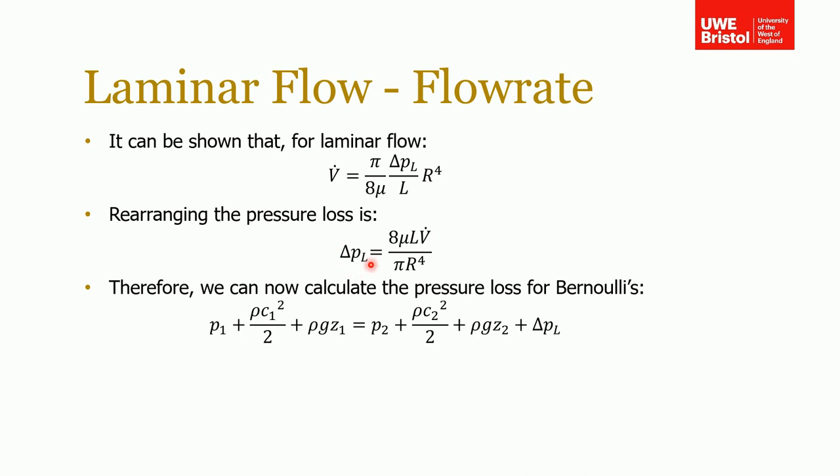So now we have a relationship for the pressure loss down a pipe. If we know the volumetric flow rate and the length and radius, which we probably will for our system, we can work out the pressure loss and then we can put that into Bernoulli's and use it to solve for whatever our problem is. There's some worked examples online that will show you how to do this.